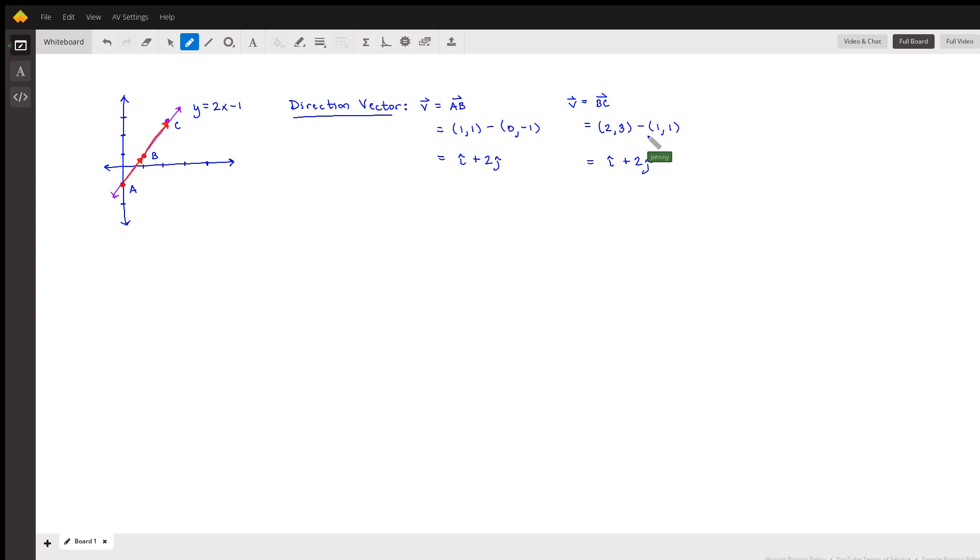And if you look carefully, it's the exact same vector. Now there is a shortcut to doing this if you don't feel like writing out the terminal point minus the initial point. If you look at what the slope was of the line, so this is kind of a different perspective.